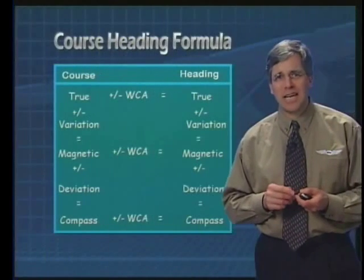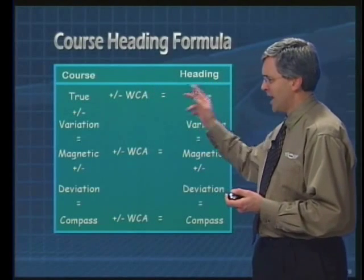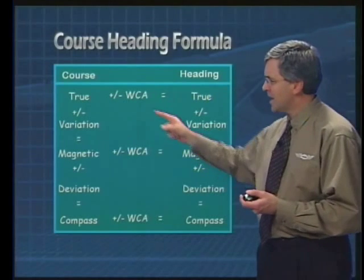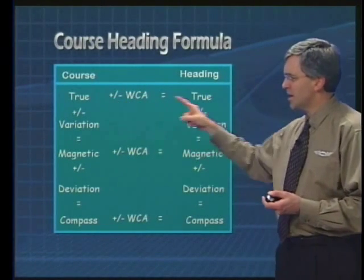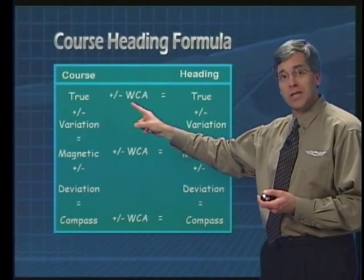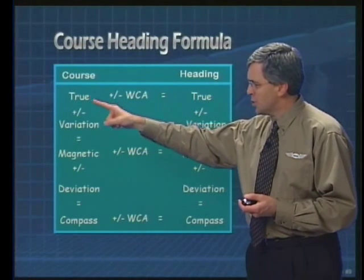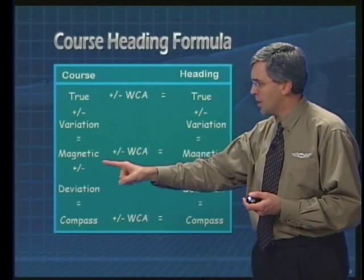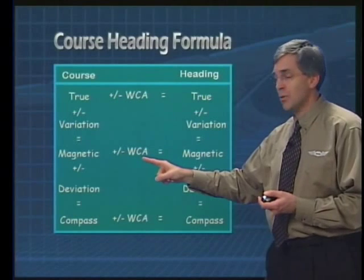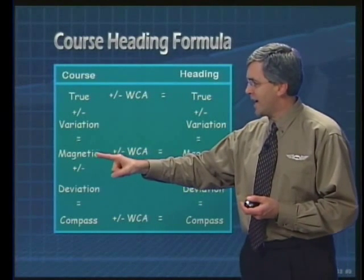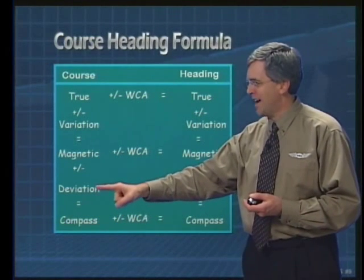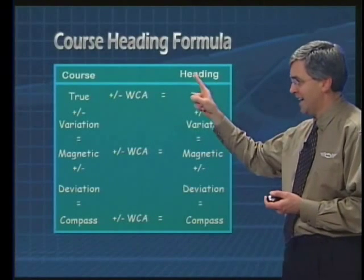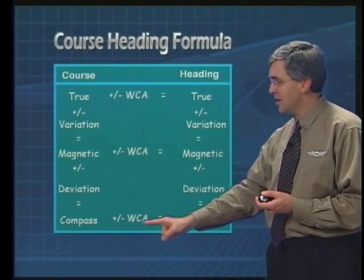For an example, let's take a look at this table. Here we've got a course heading formula with two columns: course and heading. We're going to go through and show how you can get from any one of these to another. Starting with true course: to go from true course to true heading, apply plus or minus wind correction angle. To get from true course to magnetic course, apply plus or minus the variation. To get from magnetic course to magnetic heading, apply plus or minus wind correction angle. To get from magnetic course to compass course, and then from compass course to compass heading, you apply plus or minus wind correction angle.